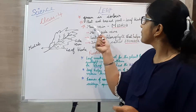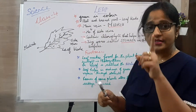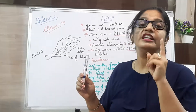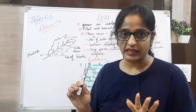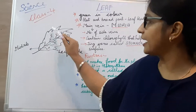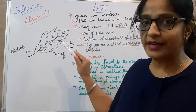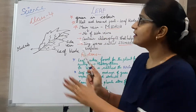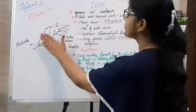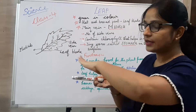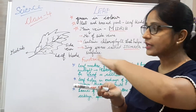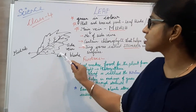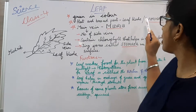First, you have to remember some points about leaf. Leaf is green in color. This is a pictorial diagram of leaf. Leaf is flat and broad. Its upper flat and broad part is called leaf blade, also known as lamina.